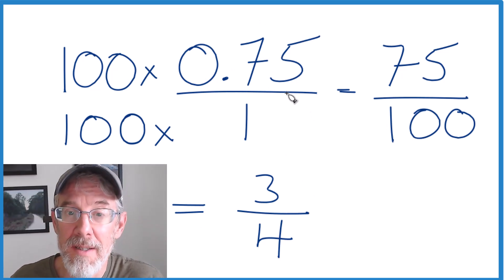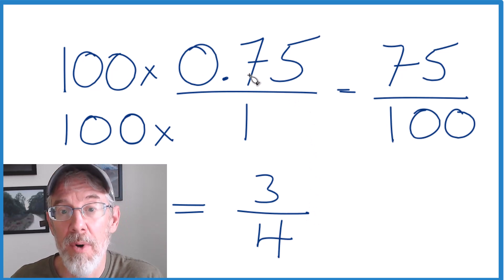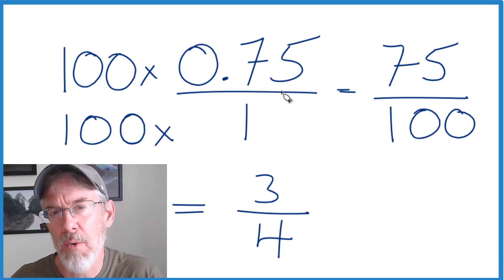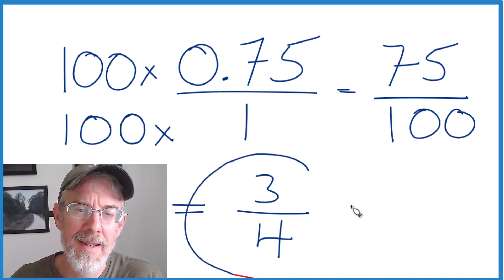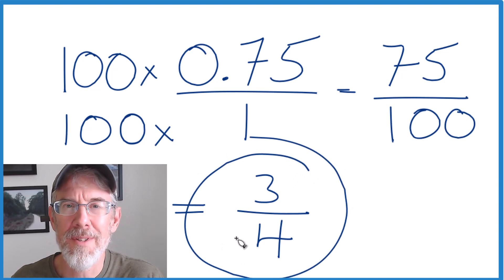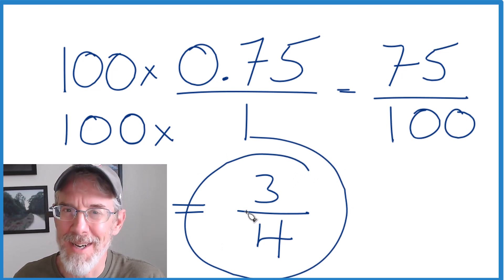This is Dr. BB, changing 0.75 — the decimal — to a fraction. The answer: 3 fourths. Thanks for watching.